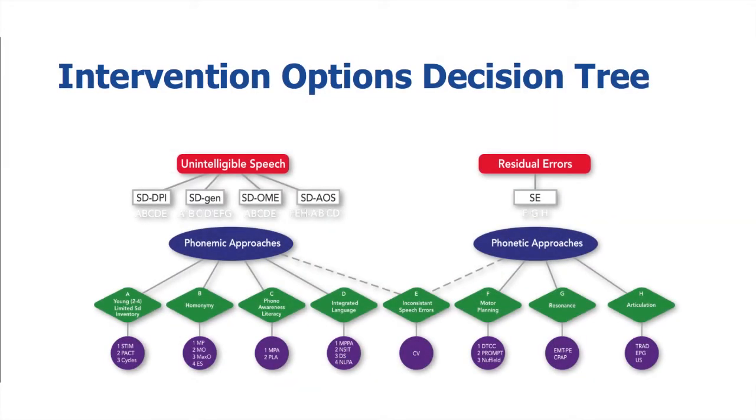I want to come back to that intervention options decision tree that I presented earlier in this course. Those green diamonds represent different populations or characteristics of children with speech sound disorders, so that we don't have one approach that fits all kids, because they're going to come with different characteristics and needs. So I want to go through a couple of these just very briefly.